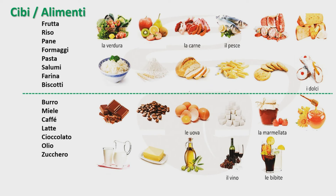La prima foto è la foto della verdura. Bisogna trovare il nome della seconda foto. Nella lista abbiamo frutta. Poi la carne, il pesce, e il nome della seguente foto è un nome plurale. Nella lista abbiamo formaggi al plurale, salumi e biscotti. Quindi questa foto è la foto dei salumi, i salumi.